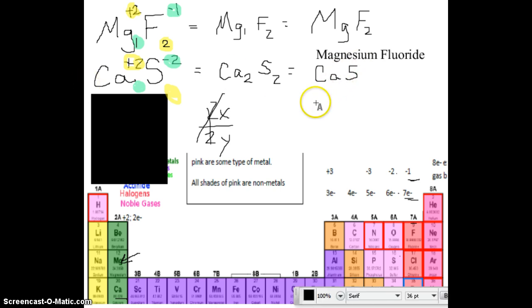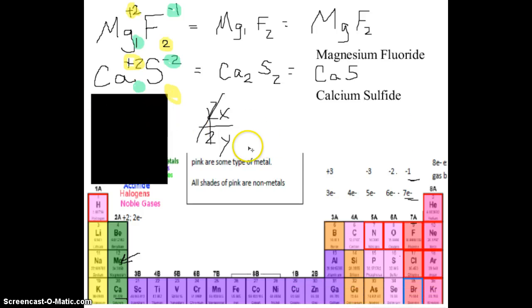Let's name that. Write the name. What's the name of Ca? Calcium. What's the name of S? Sulfur. But change the ending to I-D-E. Sulfide. That's it. Calcium sulfide.